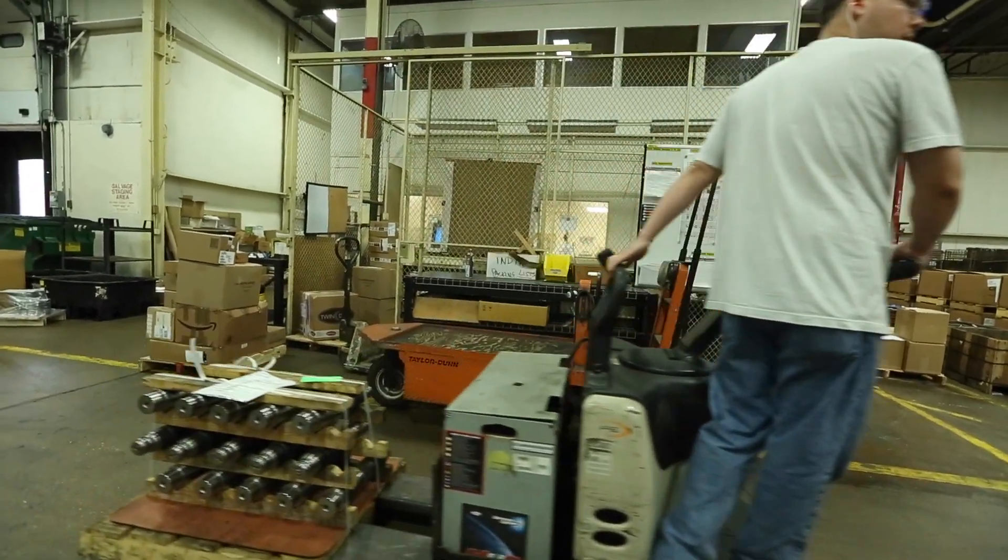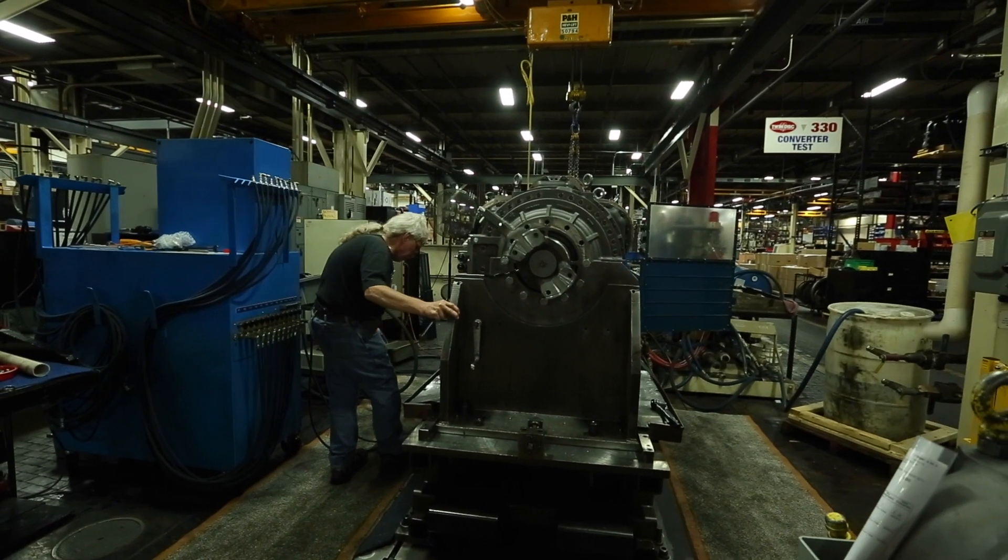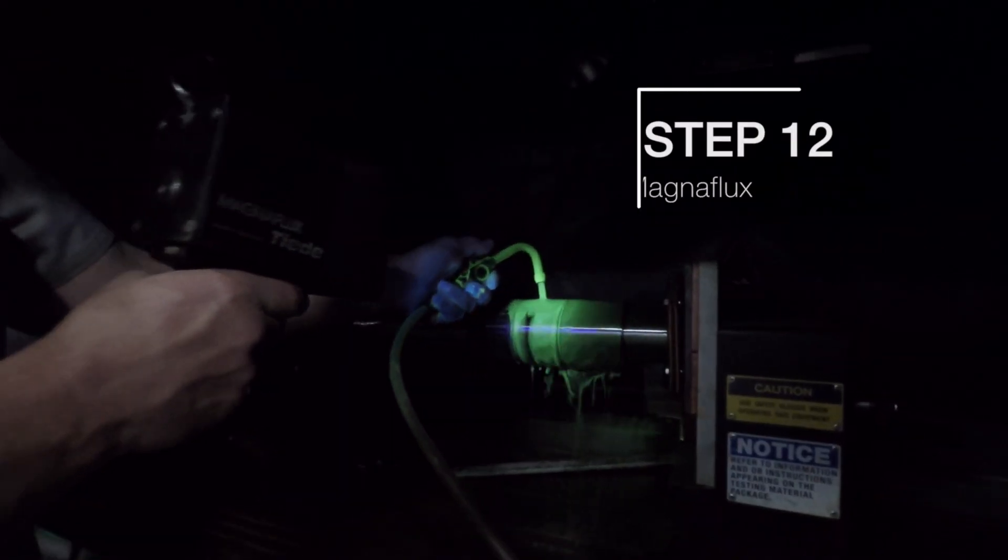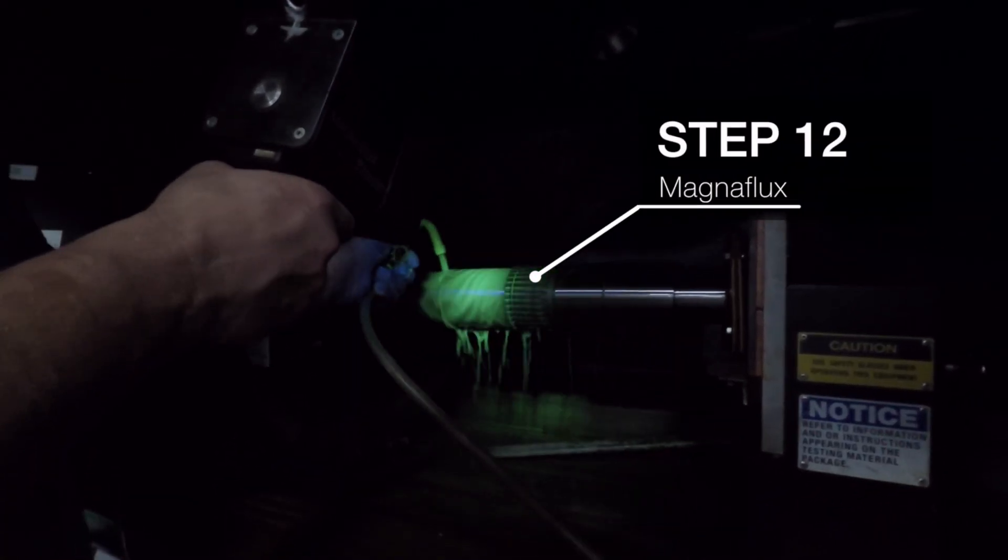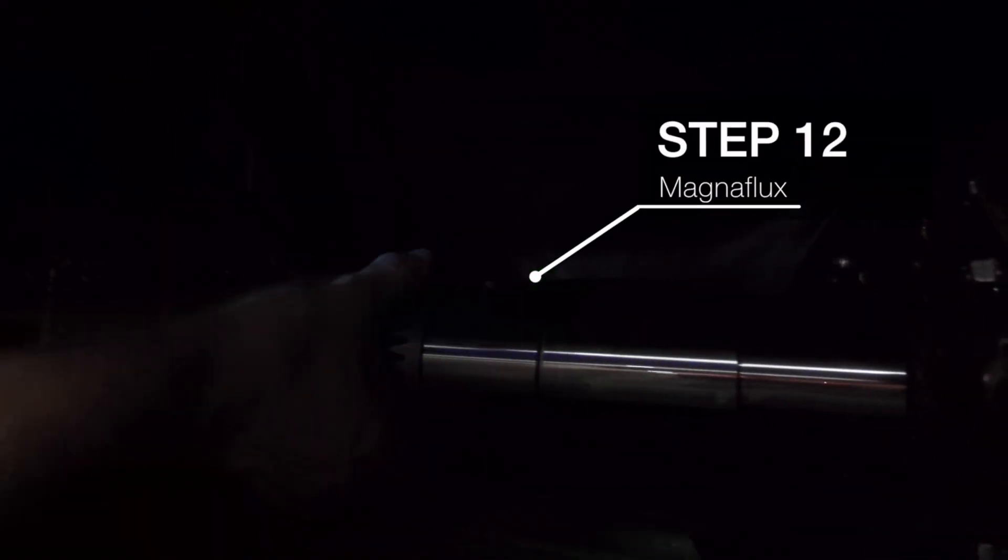Of course, quality control is critical throughout the entire production process. Our team uses a special solution and a MagnaFlex light system to reveal even the slightest imperfections that can be missed by the naked eye. This helps ensure absolute quality and if it's not up to TwinDisc standard, we start over.